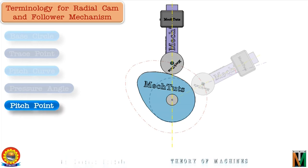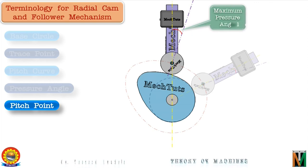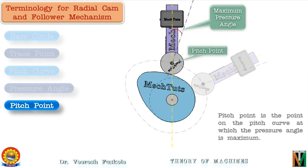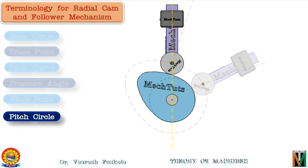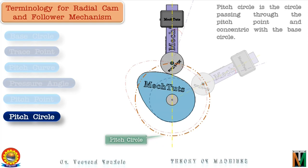The pressure angle is maximum at one particular point on the cam profile known as the pitch point. The pitch circle is a circle that passes through the pitch point and is concentric with the base circle, with its center at the center of the cam.